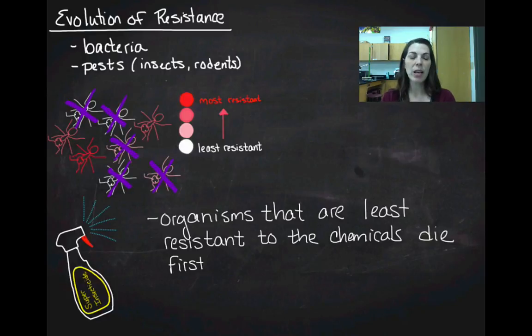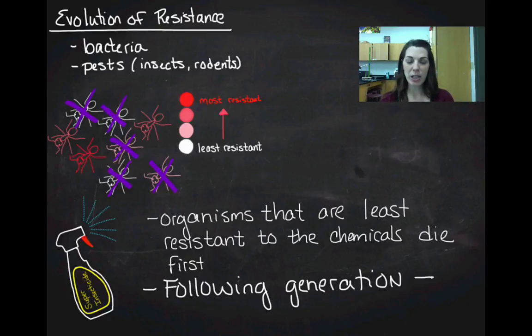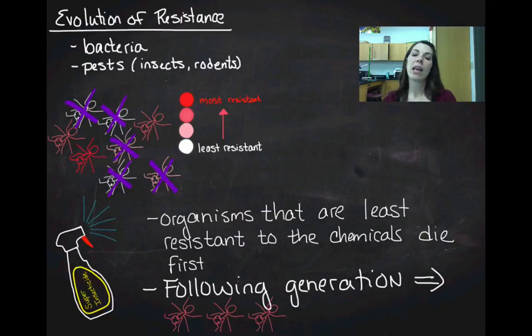That's going to leave the organisms that are the darker pink and the red. Those ants are going to survive and since they're going to survive, they're going to reproduce. So the following generation, what I end up with is the pink, dark pink, and red ants reproducing.